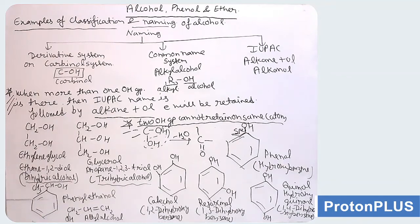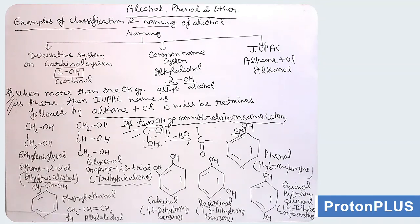Next example: CH2=CH-CH2OH, this is allyl alcohol. The alcoholic carbon atom is SP3 hybridized and it is in conjugation with the pi bond — allyl alcohol. IUPAC name: numbering from 1, 2, 3, that is prop-2-en-1-ol.